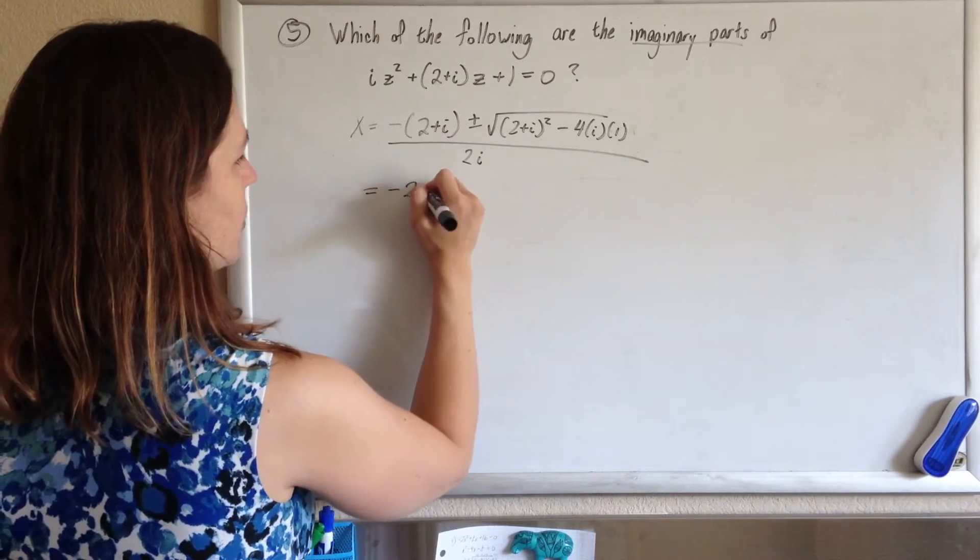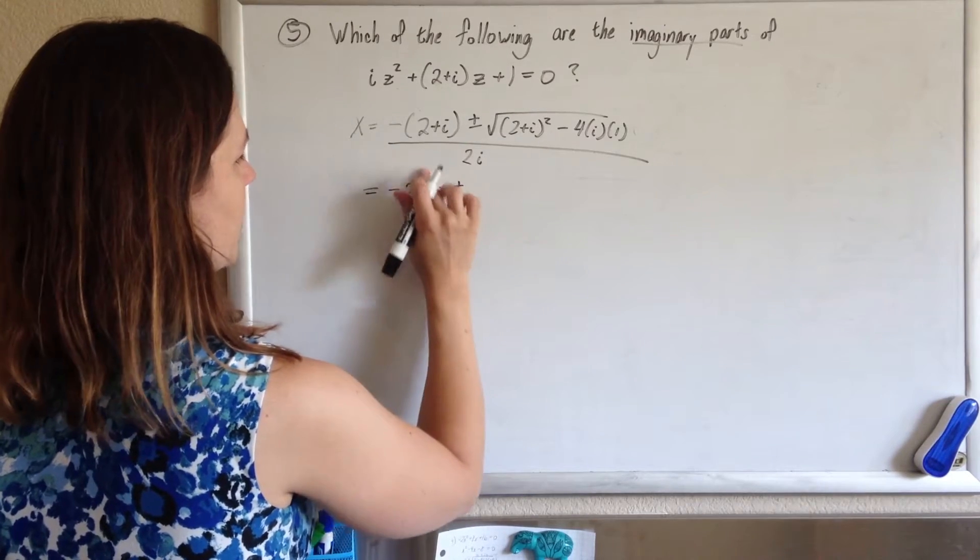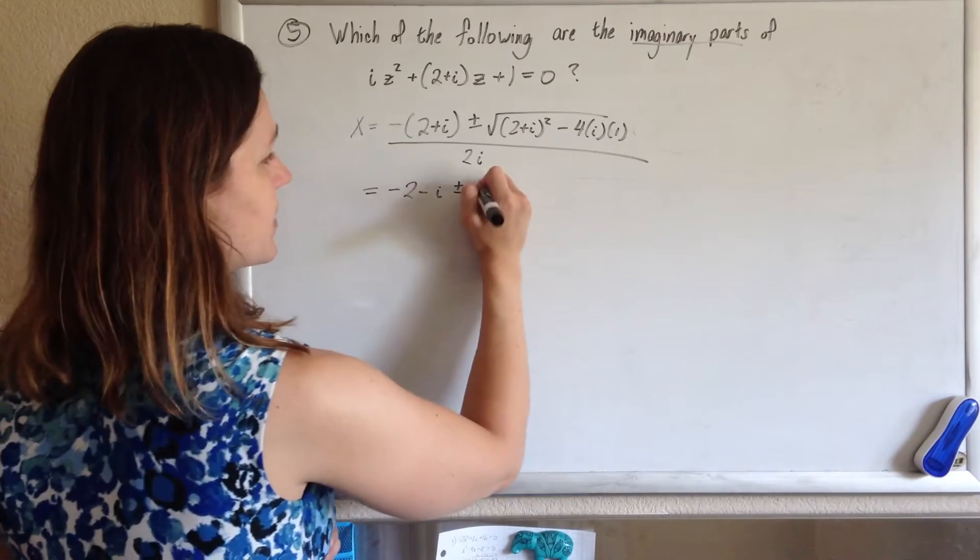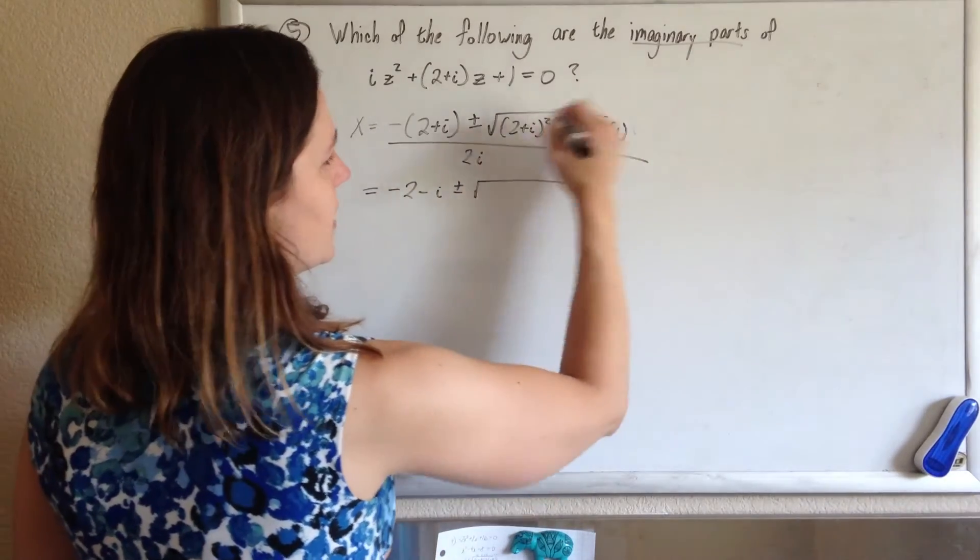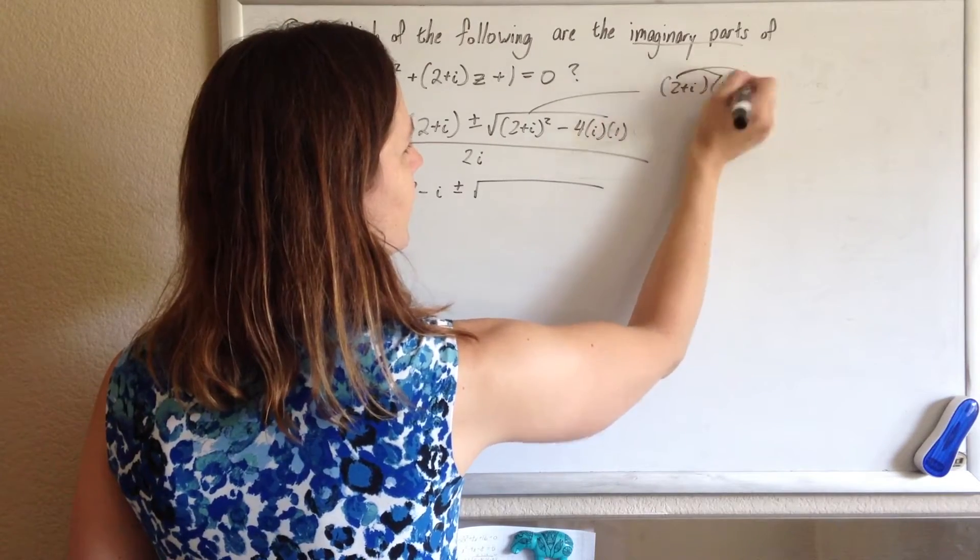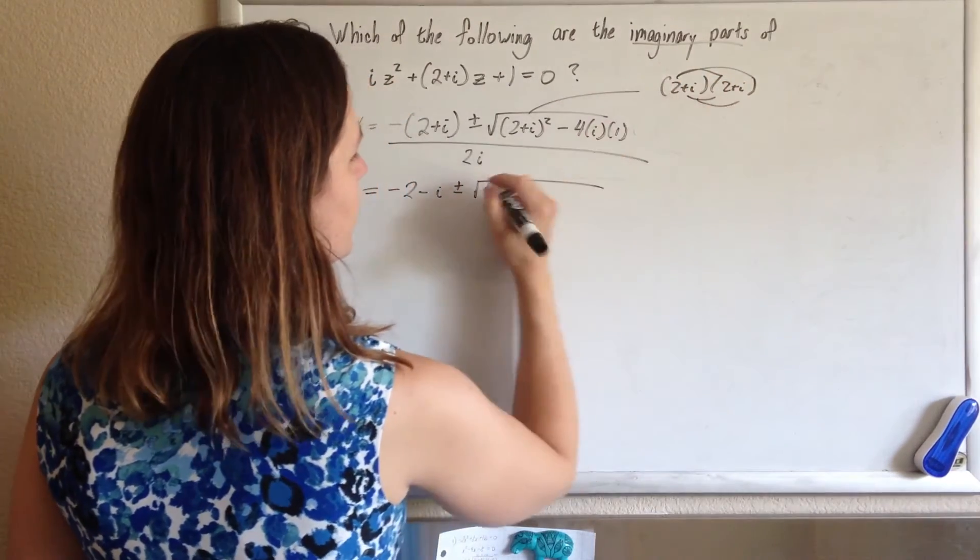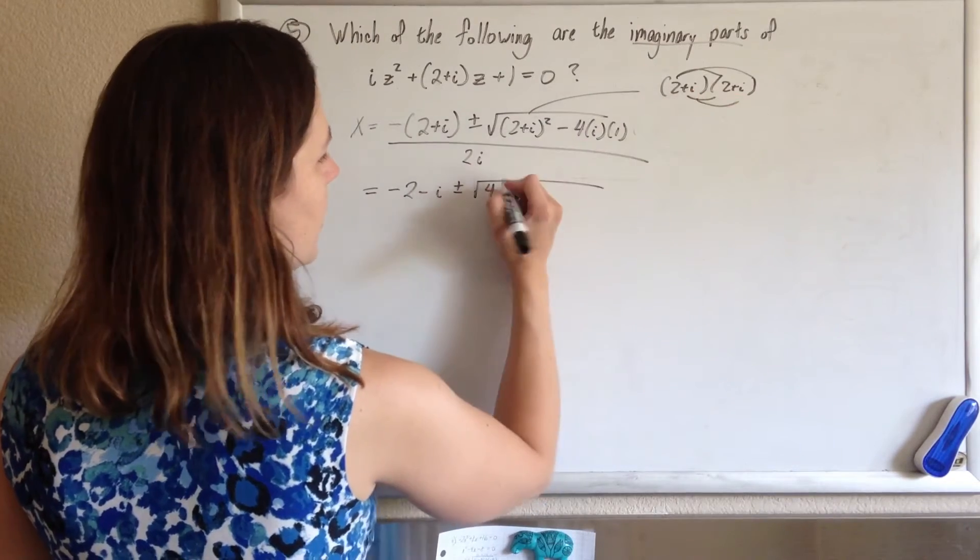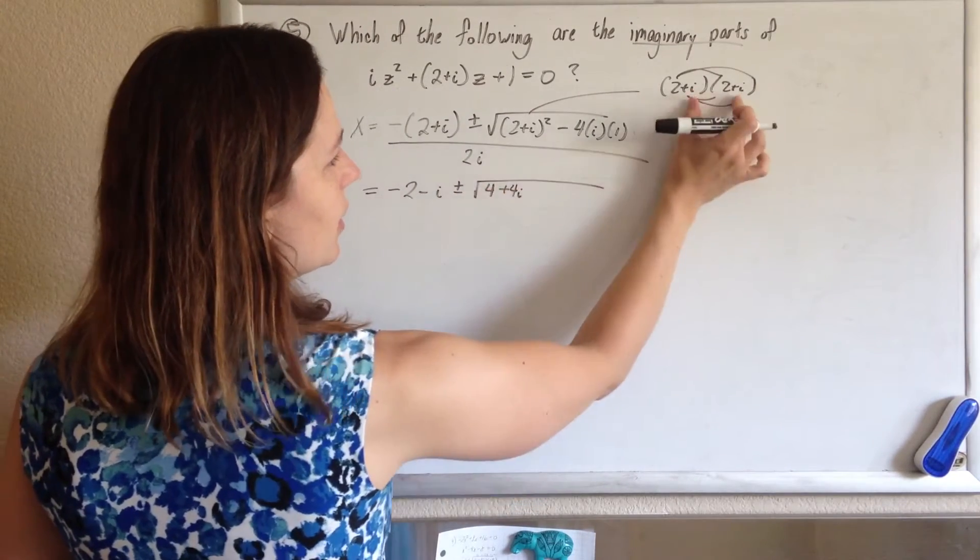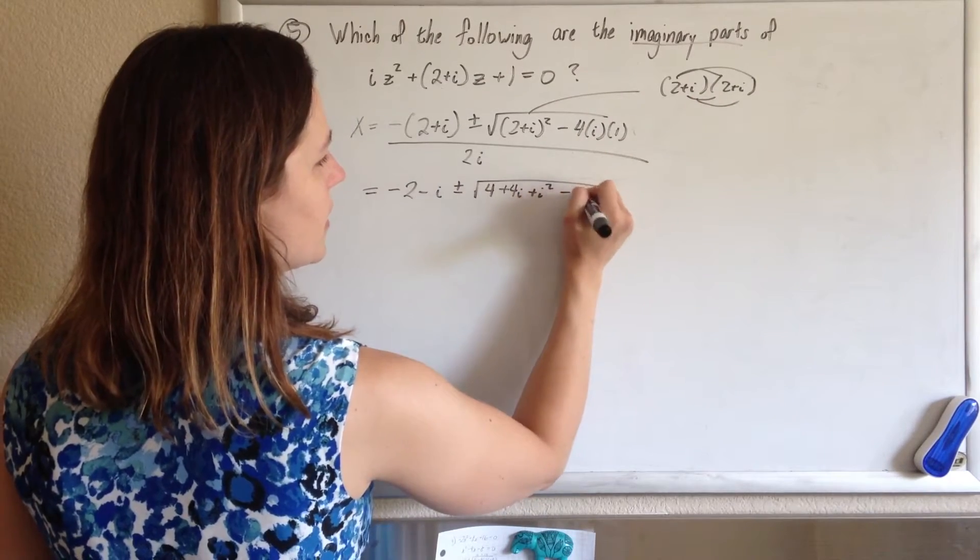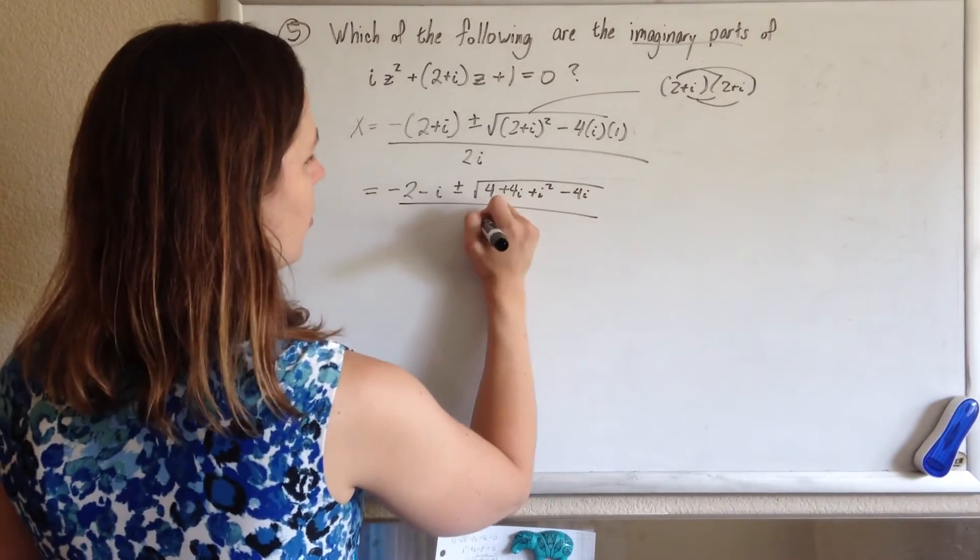So we just simplify this, so you get negative 2 plus i, distribute that negative, negative 2 minus i plus or minus the square root. If I were to take this part over here, 2 plus i times 2 plus i, and FOIL it out, I would get 2 times 2 is 4, plus 2i plus 2i plus another 2i is plus 4i plus i squared.